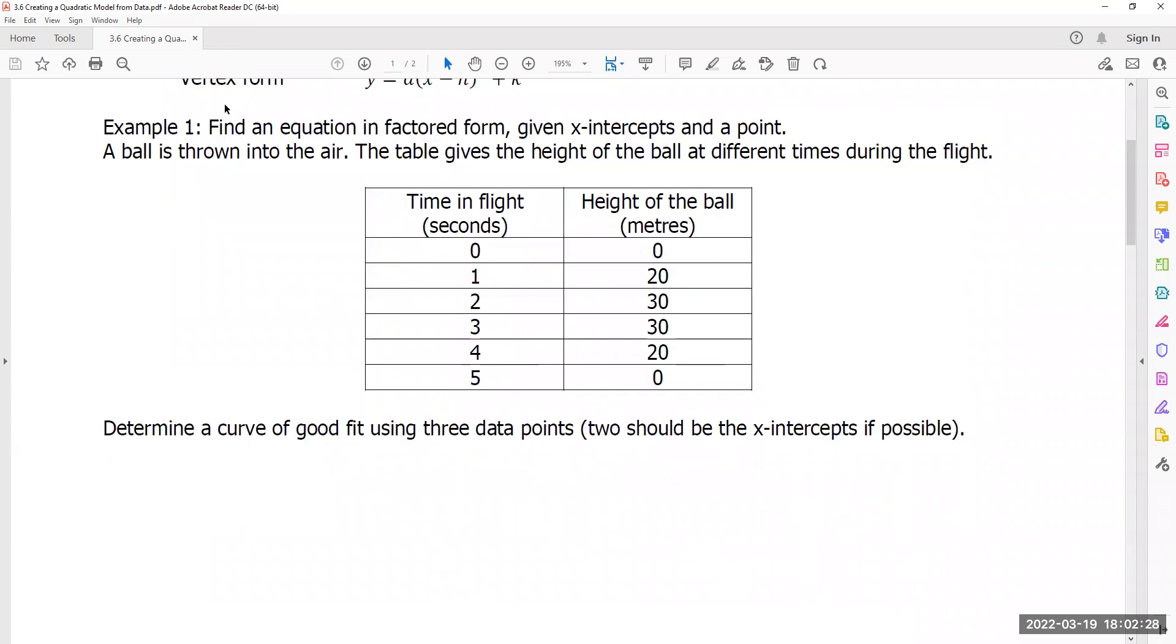Example one, find an equation in factored form. Again, that is y equals a(x - r)(x - s), given the x-intercepts and some random point. If you recall, r and s correspond with the x-intercepts of my function. Once you have these two numbers, all that's left is to figure out the a value and you're done. That's it.